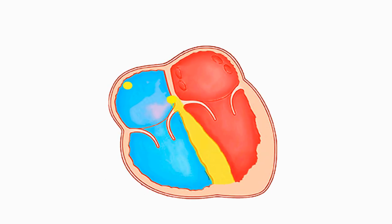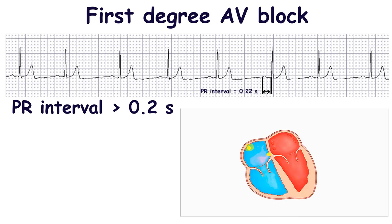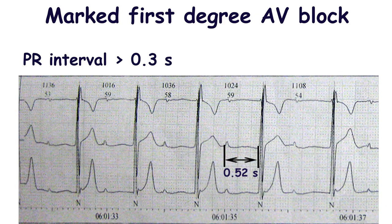There are the following types of atrioventricular blocks. The first degree AV block is diagnosed when the PR interval is greater than 0.20 seconds. In this case, all impulses from the atria are conducted to the ventricles, so all P waves are conducted. If the PR interval is prolonged up to 0.3 seconds or more, this state is called the marked first degree AV block.